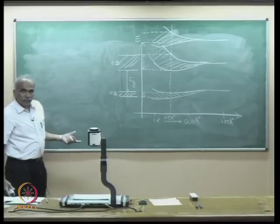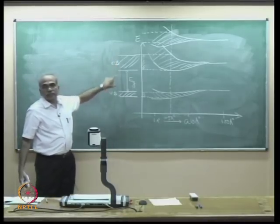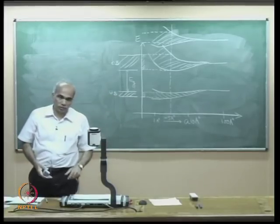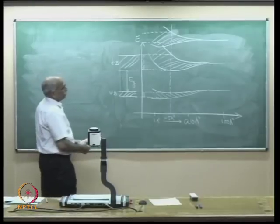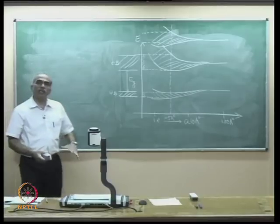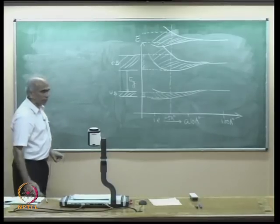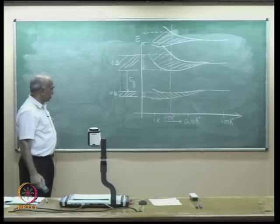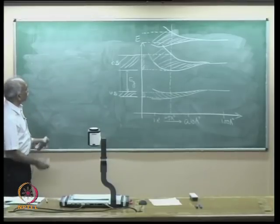So a semiconductor is characterized by energy bands. I have given a qualitative explanation here. Let us make it a little bit more quantitative and rigorous. Those of you who have studied solid state physics will have studied the Kronig-Penney model.